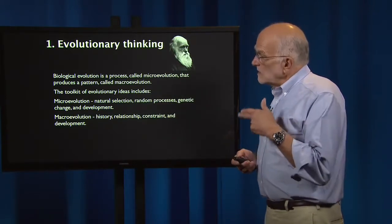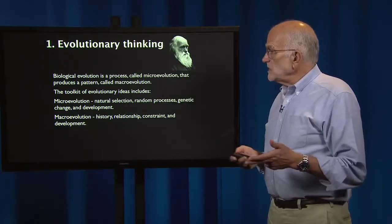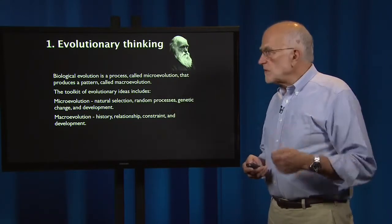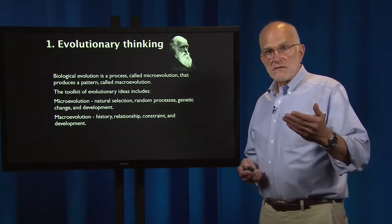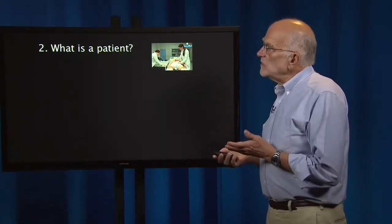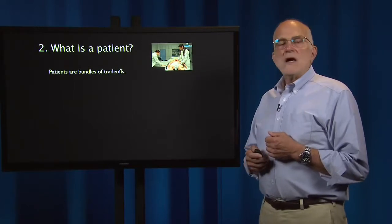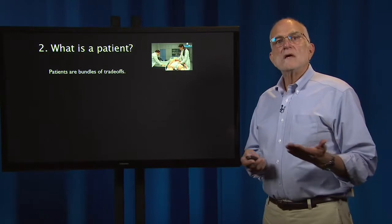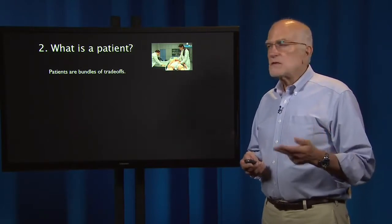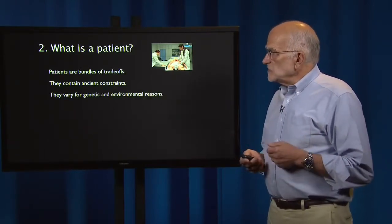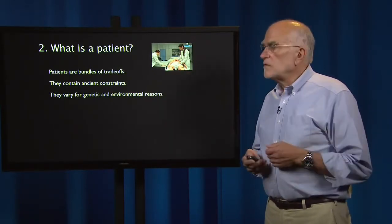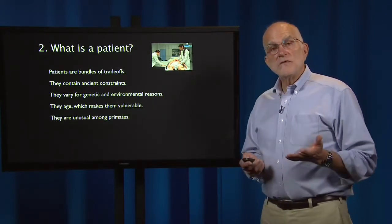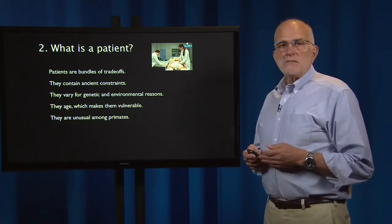In macroevolution, the framework shifts to history — how history defines relationships, provides an origin for constraints, and again, insights into development. When we think about what is a patient, patients are bundles of trade-offs. They are not built like machines with parts that you can just replace. They contain ancient constraints, vary for both genetic and environmental reasons, they age which makes them vulnerable, and they are unusual among primates.